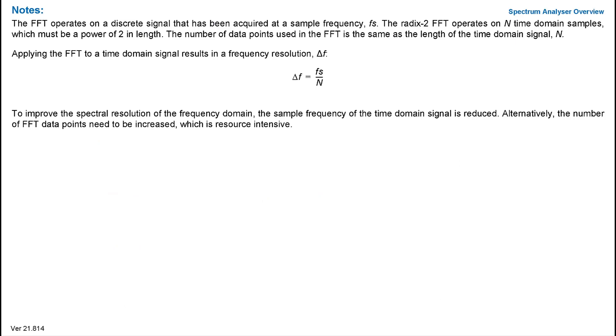The FFT operates on a discrete signal that has been acquired at some sample frequency, denoted as FS. The number of data points used in the FFT is the same as the length of the time domain signal, denoted as N. When applying the FFT to a time domain signal, the frequency resolution of the FFT is equal to the sampling frequency divided by the FFT length.